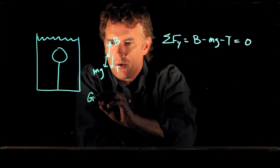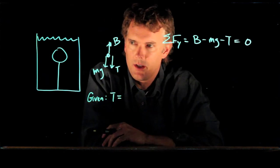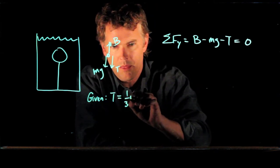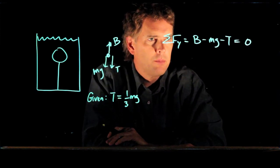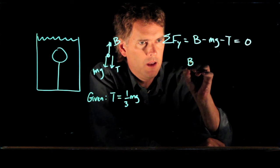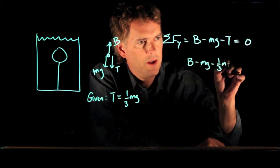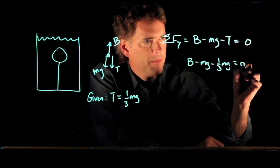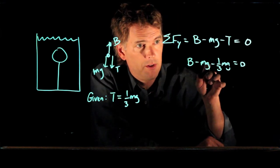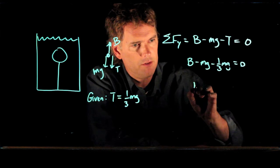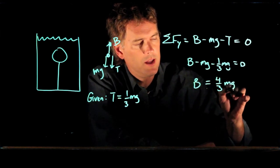Now let's say we give you a little bit more information. Let's say you can measure the tension in that string and you measure it to be one-third the weight of the object — one-third mg. Plugging this in: B minus mg minus one-third mg equals zero. Lumping those two terms together gives four-thirds mg, so B is equal to four-thirds mg.